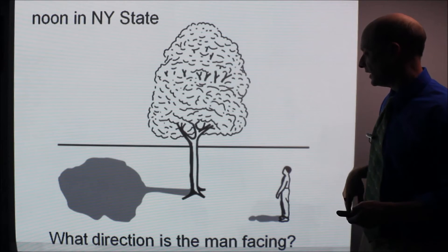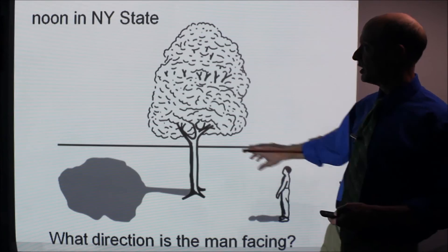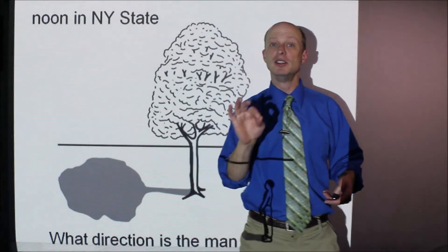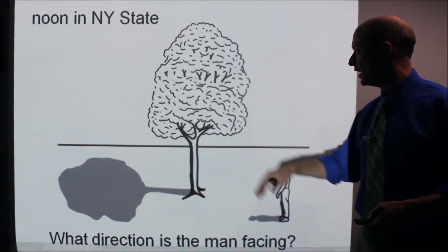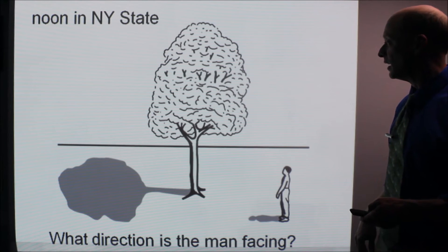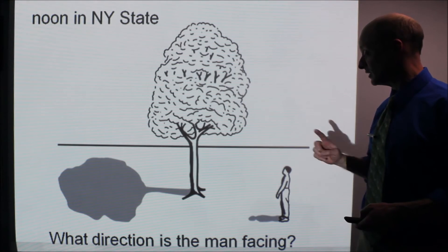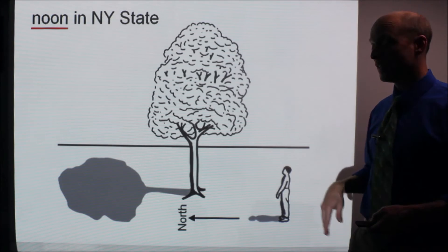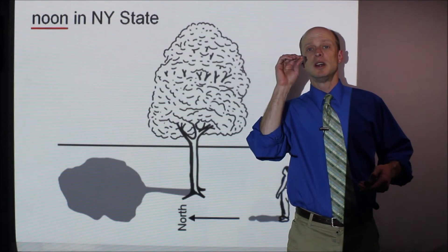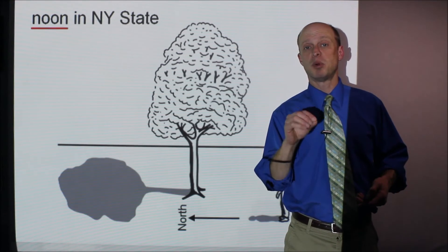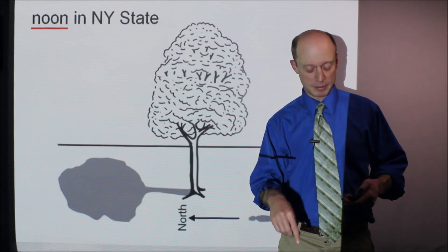This question asks: what direction is the man facing? The key part is that you're told this represents noon — solar noon — in New York State. See his shadow and see the tree. The answer is North. At solar noon, the shadow points due North. Make sure you know it.